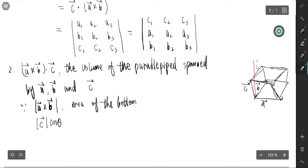This is A cross B and C. The length of C times cosine theta is the length of this part. That's actually the height.